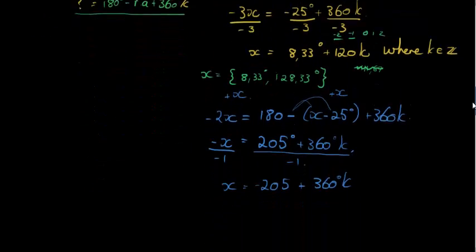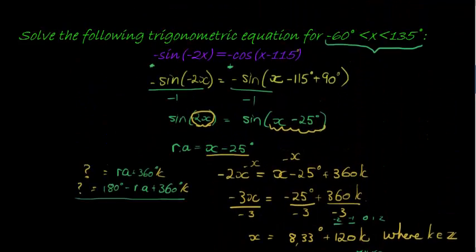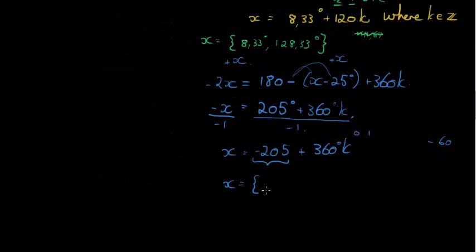Let's see if we can do that. First of all, if k is equal to 0, we have negative 205. The smallest time I have is negative 60. Doesn't work. If k is equal to 1, I have negative 205 plus 360. That gives me what? 155. 155 is too big. Too big. 155 is too big. Doesn't work.